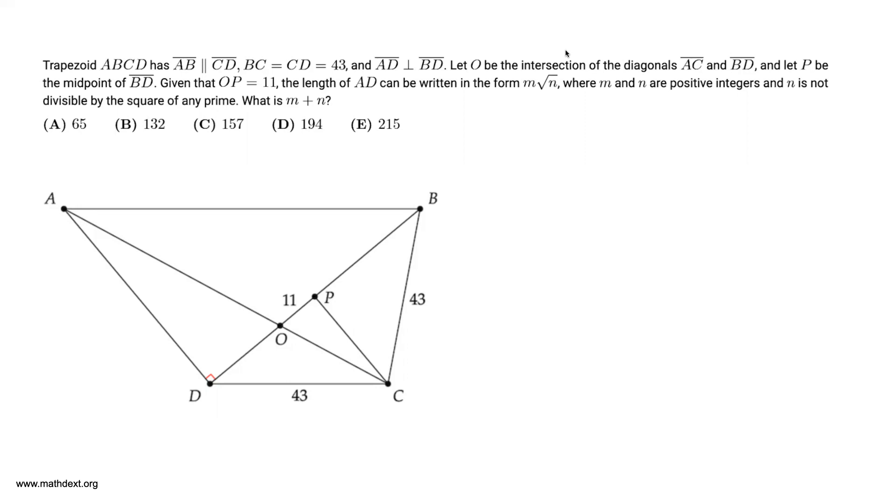The problem reads: trapezoid ABCD has AB parallel to CD, BC equals CD equals 43, and AD is perpendicular to BD.